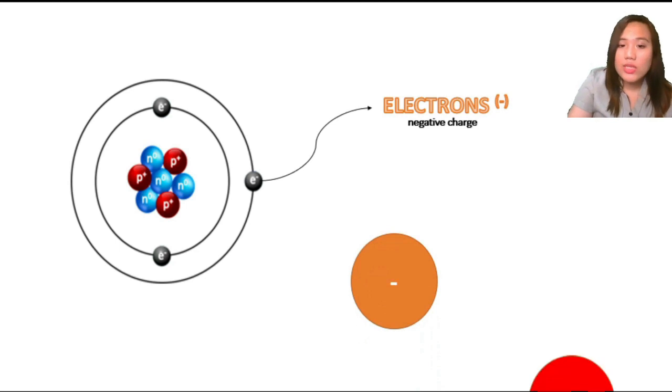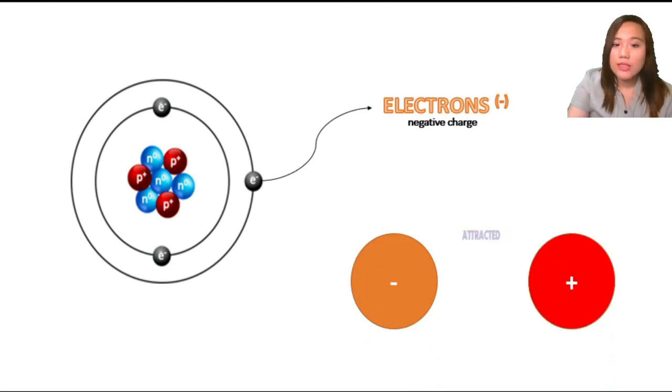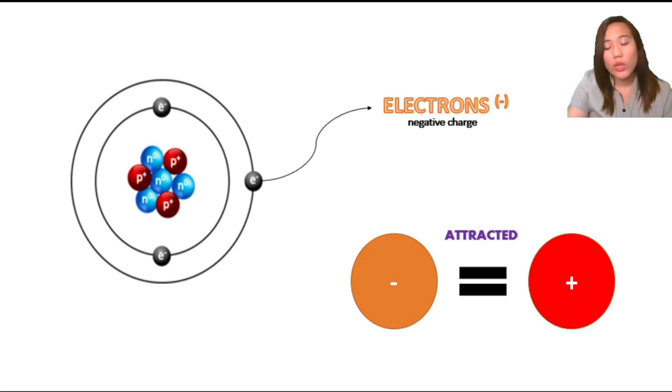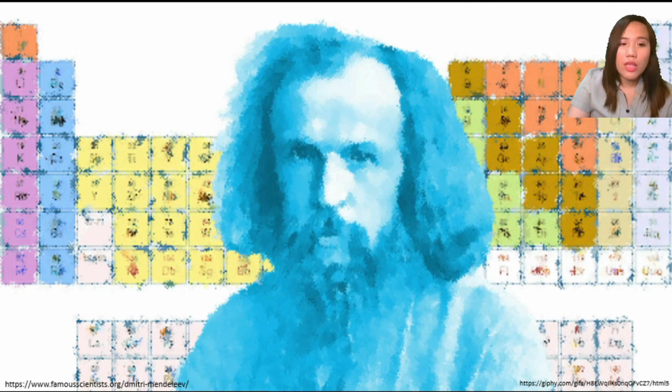Electrons and protons are always attracted to each other and always equal in number. However, protons are always constant. So there are times when electrons can be gained or lost.